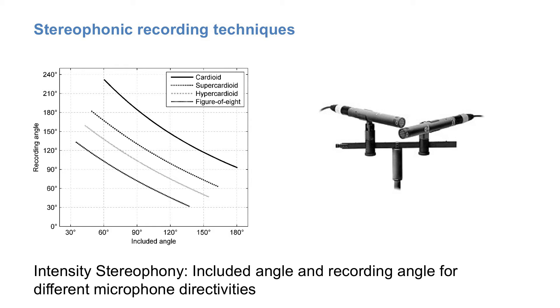Using the directivity of the microphones and their included angle, the resulting recording angles can be calculated. For example, for the Blumlein configuration with a figure of eight microphone and an included angle of 90 degrees, we are around here and get a recording angle of about 75 degrees. Thus, sound sources within an angle of 75 degrees from the microphone will fill the stereo panorama from left to right.